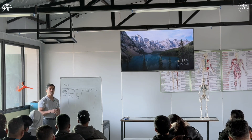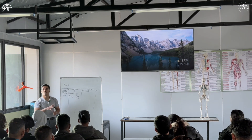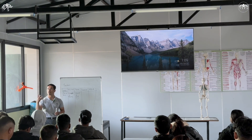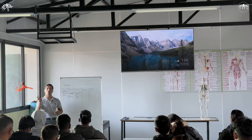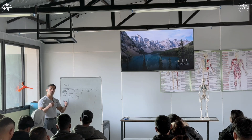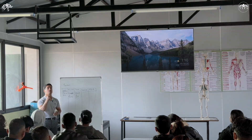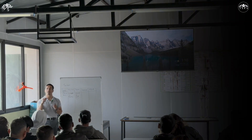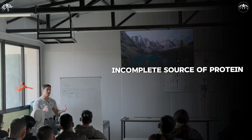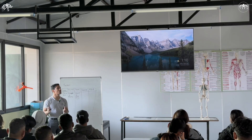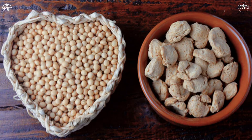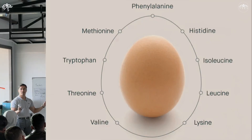For plant-based proteins — if all 9 essential amino acids are present, it is considered a complete protein. If not all 9 are present, it is an incomplete protein. Many plant-based proteins in your diet are incomplete proteins.